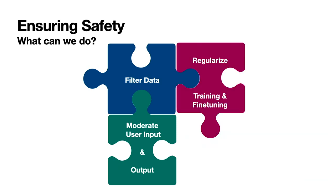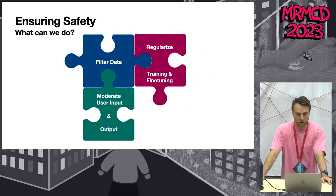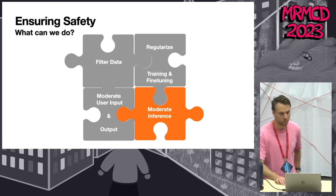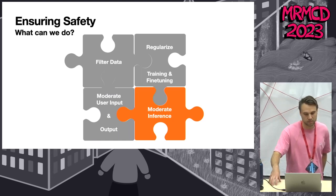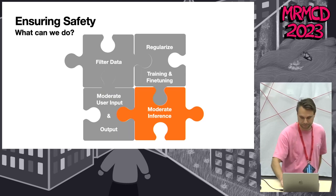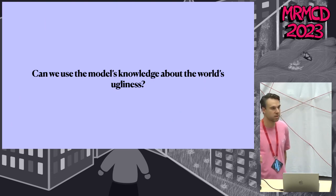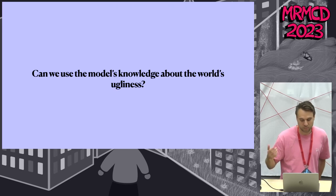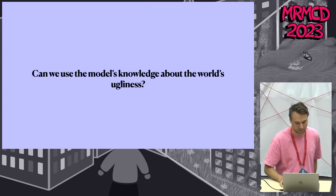Another approach is fine-tuning the model, though this is also expensive and requires defining what is inappropriate beforehand. That's why we go for a different approach: we don't change the pre-trained model — we just influence the inference process. This also raises the question of whether we can use the model's knowledge of the world's ugliness to actually suppress it during generation.